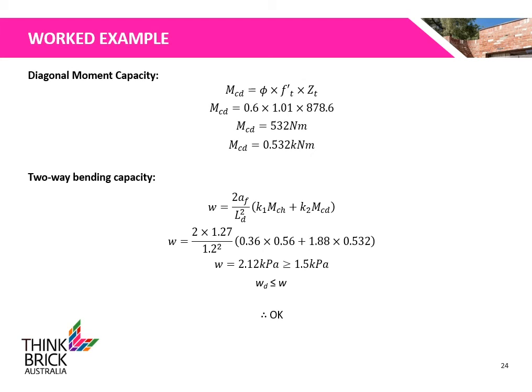Using the horizontal and diagonal bending moment capacities, the total two-way bending capacity of the wall is calculated to be 2.12 kPa, which is greater than the design loading of 1.5 kPa. Therefore, the wall is okay for the given design loading.